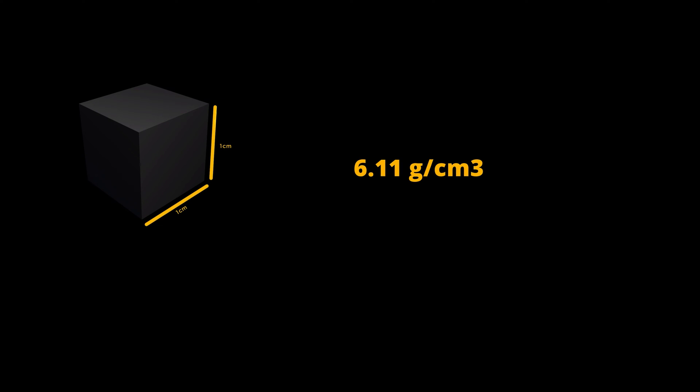Vanadium has a melting point of 1,910 degrees Celsius and a boiling point of 3,407 degrees Celsius. At room temperature, vanadium has a density of 6.11 grams per cubic centimeter and 5.5 grams per cubic centimeter when liquid at melting point.